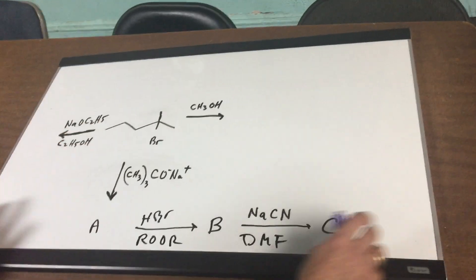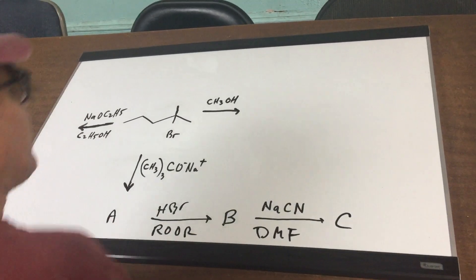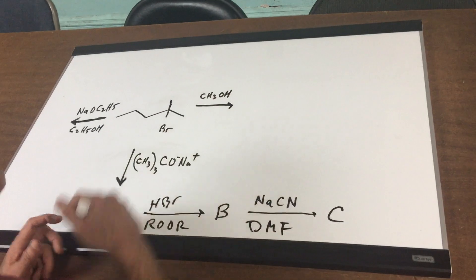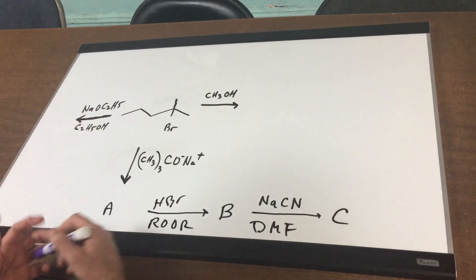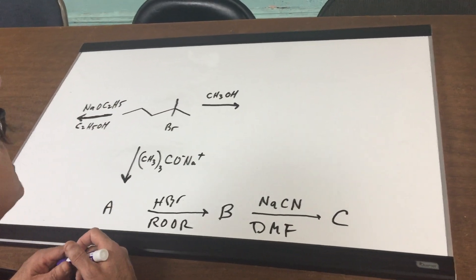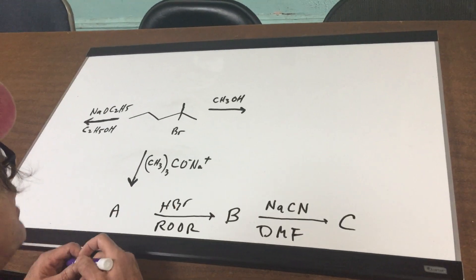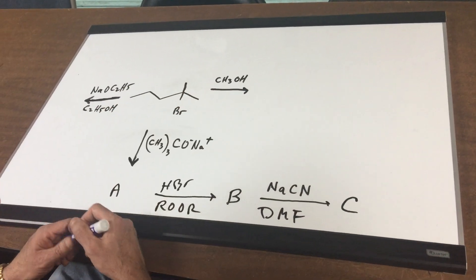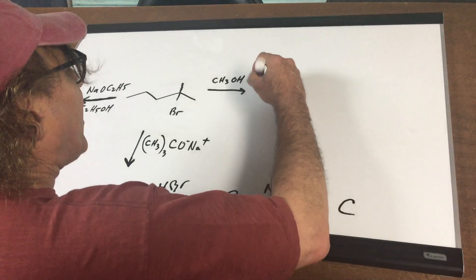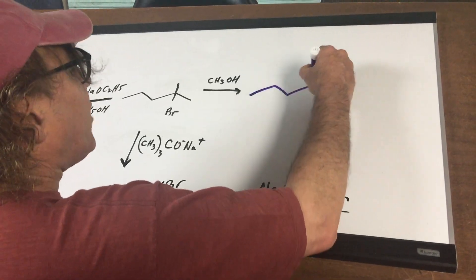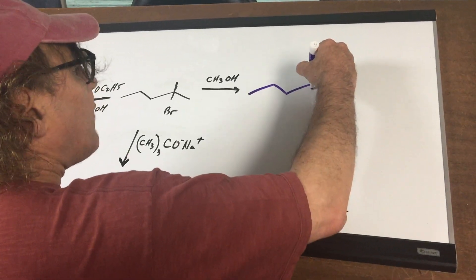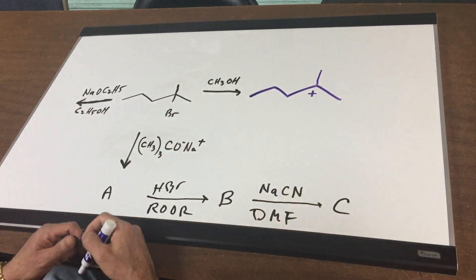I give you in this problem a tertiary halide and treat it with methanol. I want you to give me the two possible products. Obviously an SN2 cannot occur because it's too sterically hindered. So the only thing that could occur is the leaving group would leave and you would form a carbocation.